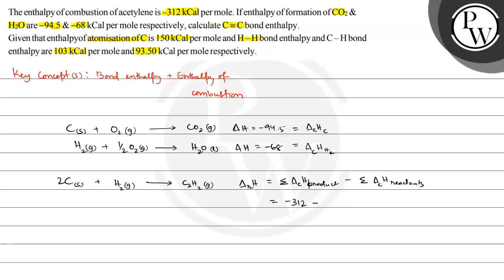So: minus 312 minus [2 multiplied by minus 94.5 plus 1 mole of hydrogen, that is minus 68]. This equals minus 312 plus 189 plus 68, giving a value of minus 55 kilocalorie per mole. This is the reaction enthalpy for the acetylene formation reaction.